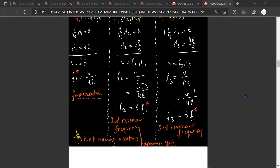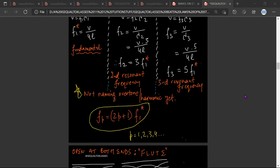For a pipe closed at one end, this is the general formula. The pth random overtone will be equal to (2p+1) into f1 star, where f1 star is my fundamental frequency. And this is my overtone.